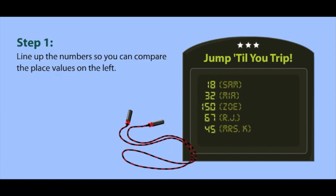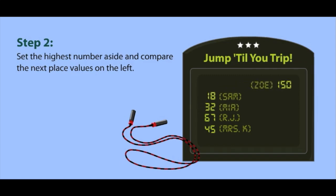Line up your numbers so you can compare the place values on the left. Right away, we know that Zoe completed the most jumps because her number is the only one with a digit in the hundreds place. Set the highest number aside and compare the next place values on the left. The highest number in the tens place is 6. That's RJ.